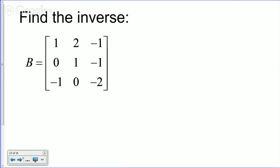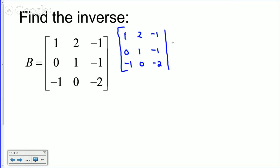For a 3×3 matrix there's no simple formula, so we go back to RREF. We set up the augmented matrix with I₃ on the right and row-reduce. Row 1 is already good, so now we need to change row 3.